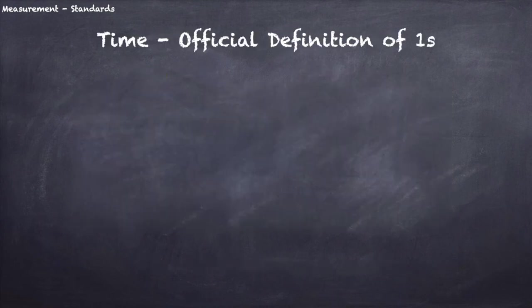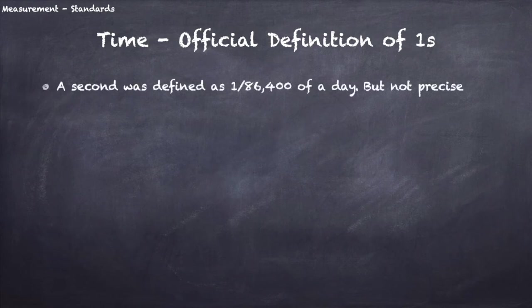Okay, so how long is a second? A second was originally defined to be 1 over 86,400 of a day. However, the length of a day is not constant. It can be off by about 3 milliseconds a day. This is of course unacceptable by modern science standards.